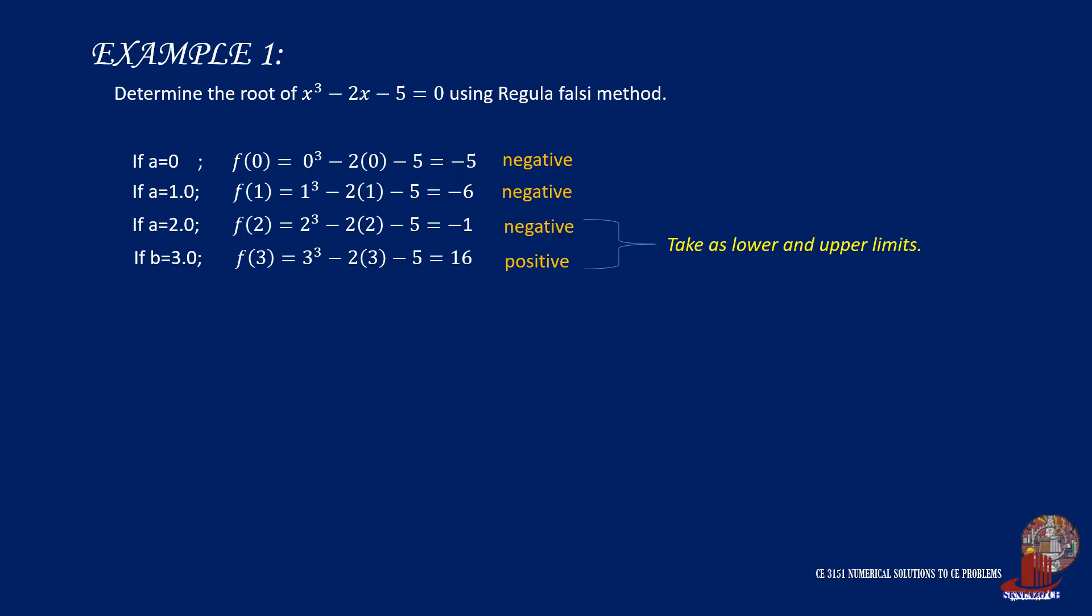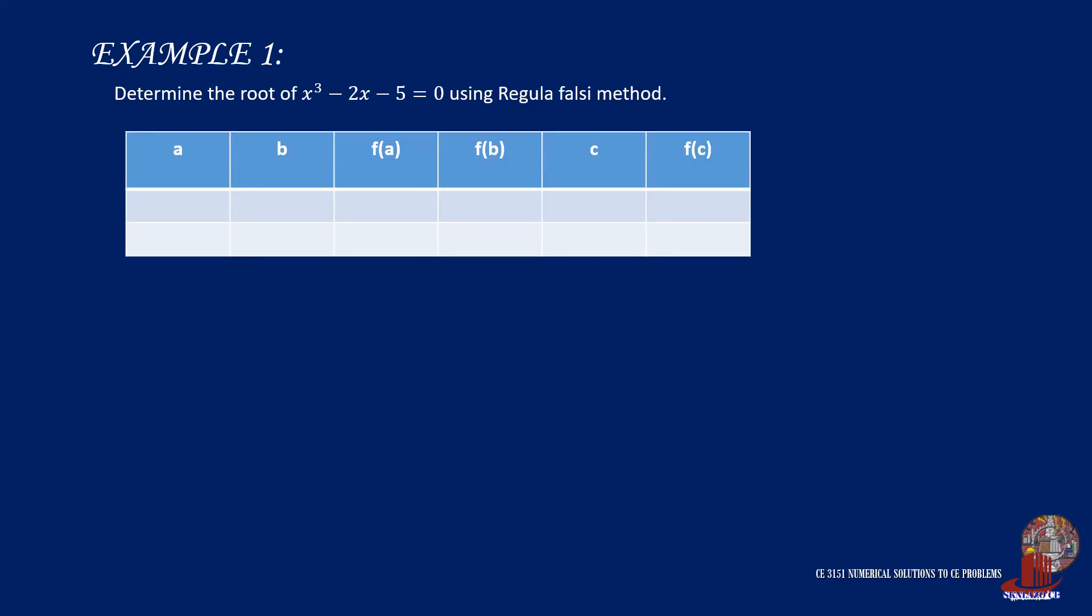Proceed with solving for the approximate using the formula. In this case, let's use the first formula. So 2 times 16, less 3, times -1, all over 16, less -1, yields 2.0588. Place the values in the table to easily and clearly check further iteration. So a is taken as 2, with its function as -1. B is 3, with the resulting function value of positive 16. The approximate was also solved as 2.0588. To complete the table, plug the value of c into the equation to have -0.3911.